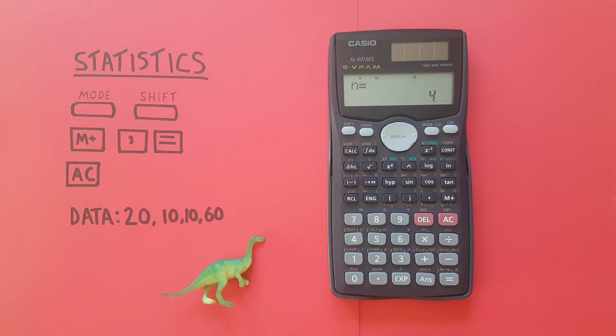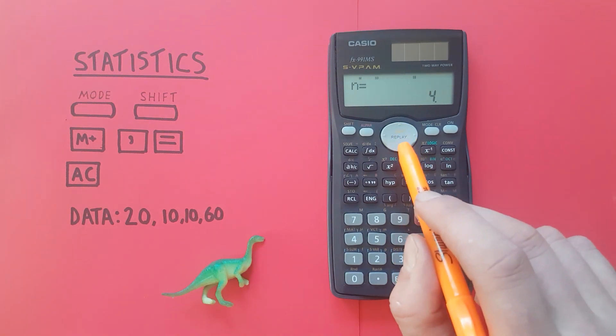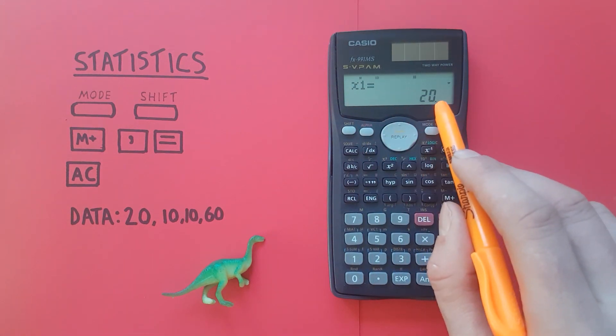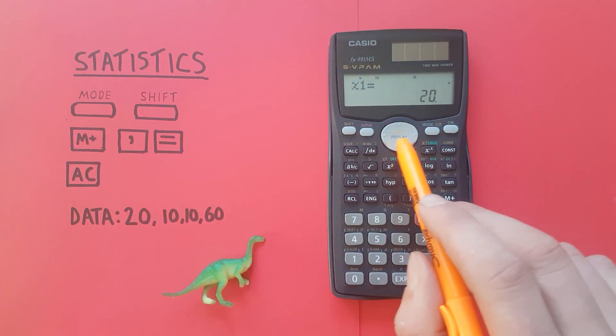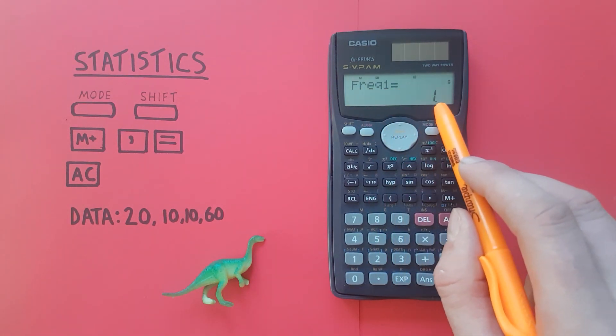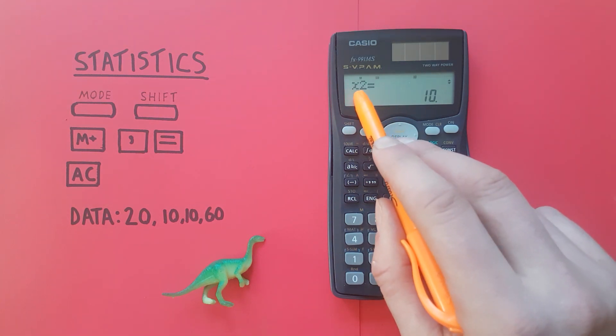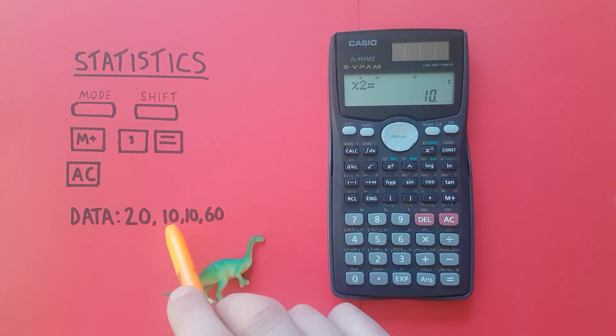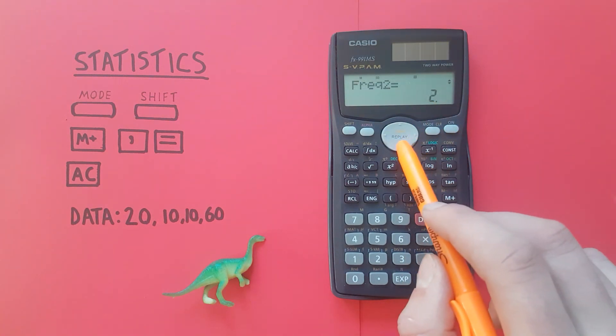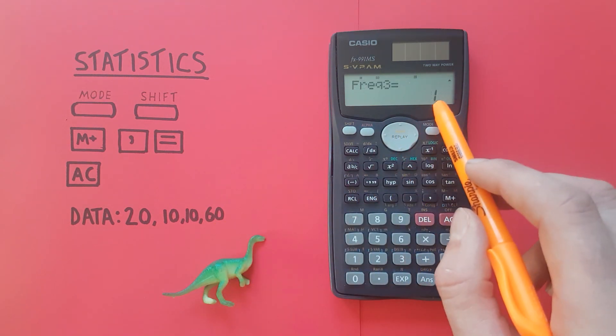You can view all your data in the data set by the up and down arrows that you can scroll through. If you go down you get x1 equals 20. So this is our first item in our data set. Scroll down again it says frequency 1 is 1, so the first item is in there once. Down again x2 equals 10. Yeah that's our second item, is in there twice. x3 which is 60, is in there once.